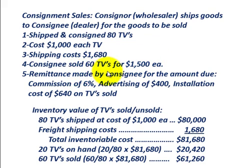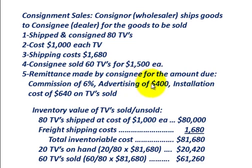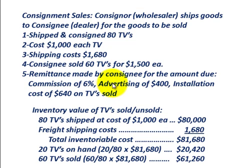Remittance was made by the consignee for the amounts due. The consignee charges a 6% commission rate on sales, and they also paid advertising costs of $400 and installation costs of $640 for the TVs that are sold. The agreement between the consignee and the consignor was that the consignor would be paying these costs.